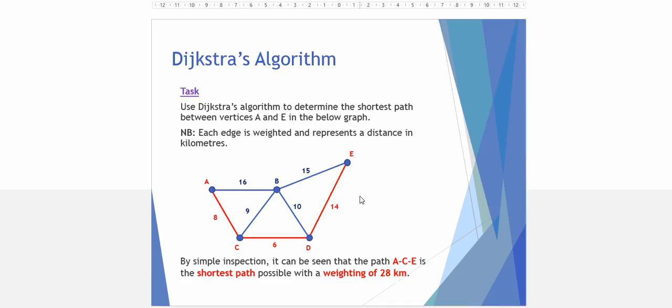By inspection, you can see that the shortest path is from A to C to D to E, and it has a total weighting of 28 kilometres. However, sometimes that's more challenging when you have many different combinations, so we go to Dijkstra's algorithm to guarantee we get the correct outcome.